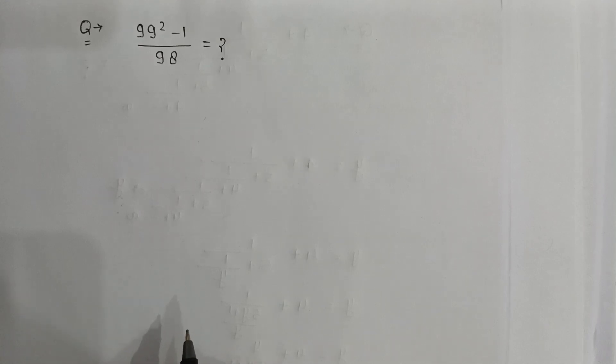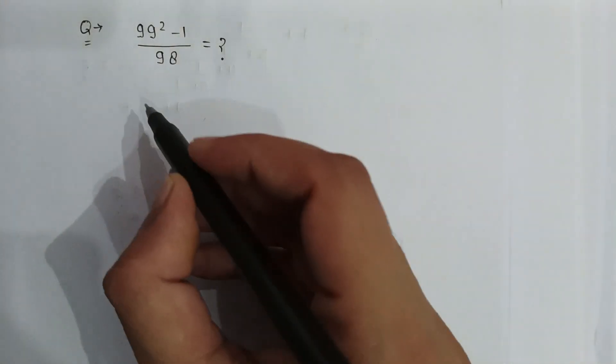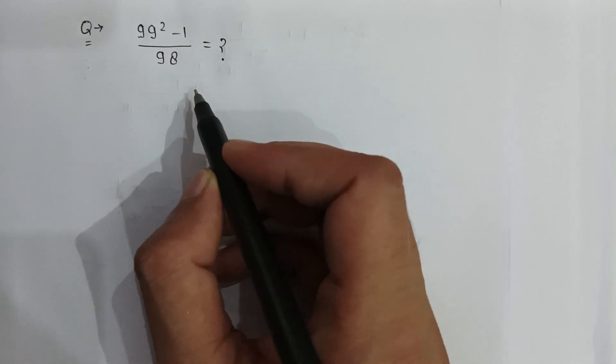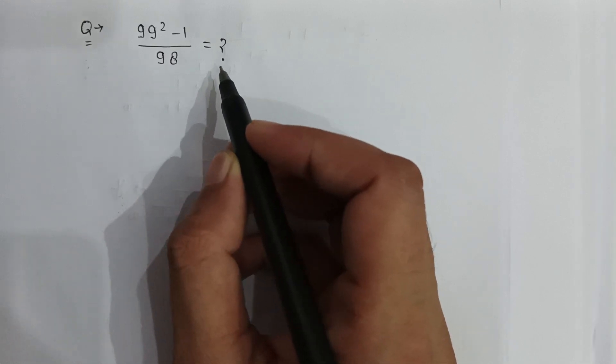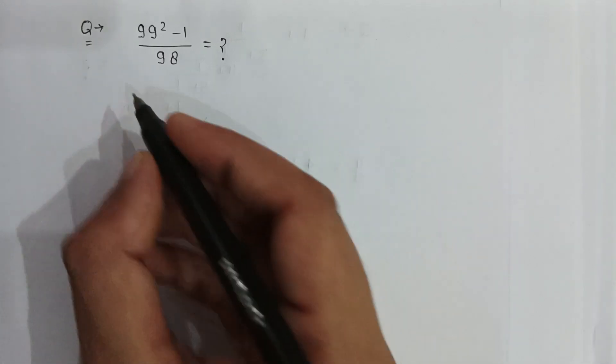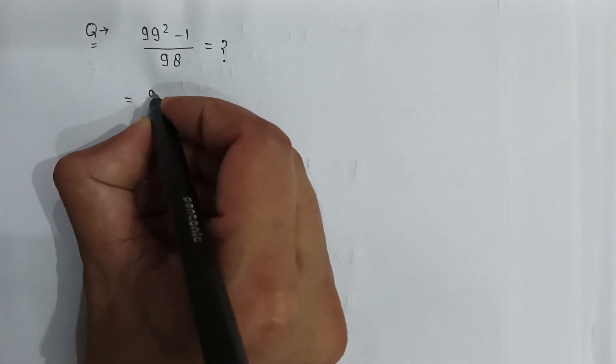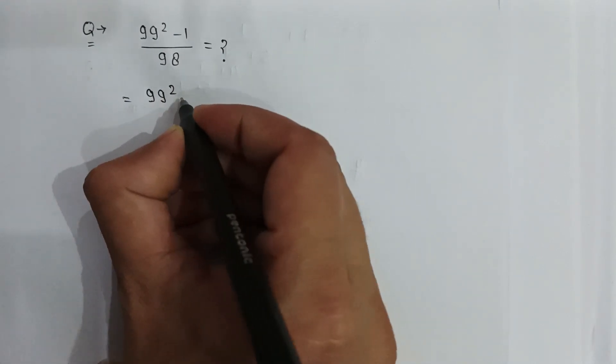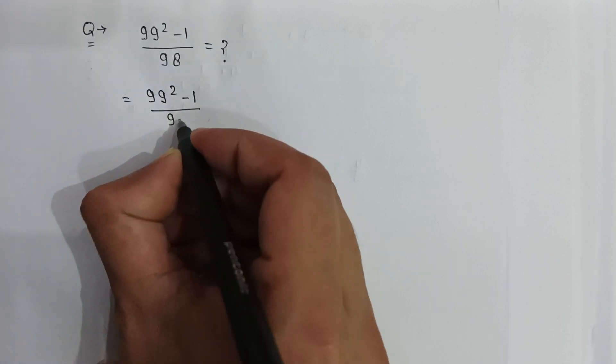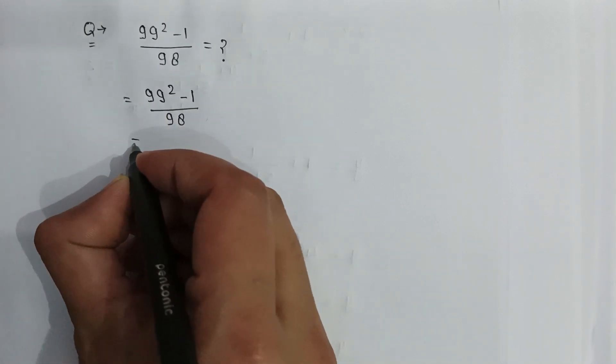This is a very nice exponential and fractional problem: 99 squared minus 1 over 98. We have to find the value of this expression, 99 squared minus 1 over 98.